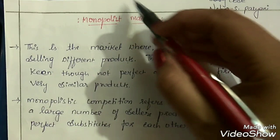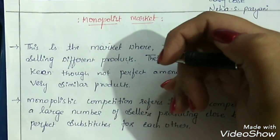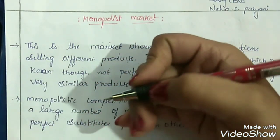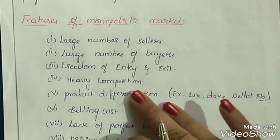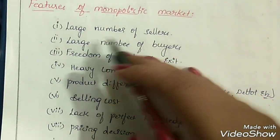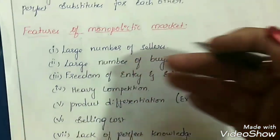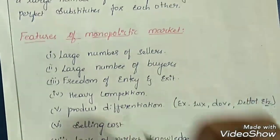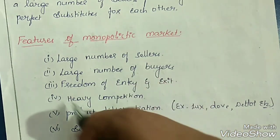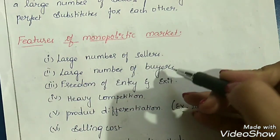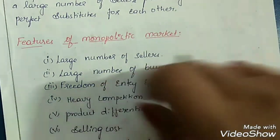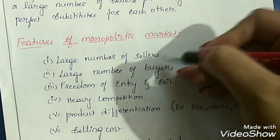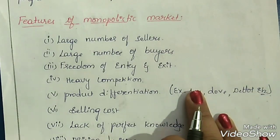In the real world, we witness monopolistic market situations. We can find monopoly in some sectors, but perfect competition market is imaginary. Now let's look at the features of the monopolistic market. First is large number of sellers. As I mentioned, there will be a large number of sellers and also a large number of buyers. In monopoly form of market, we had only a single seller selling to many buyers, but here there are many sellers as well as many buyers.